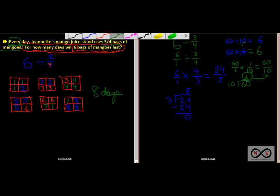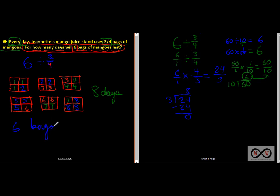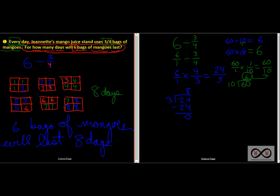Looking at what we've done today: we used our visual fraction model — pictures to represent the operation — and we handled it mathematically as well. Now let's put the answer in words. For how many days will six bags of mangoes last? Six bags of mangoes will last eight days. We used numbers in our mathematical model, pictures in our area model, and words in our complete answer — giving us a well-rounded answer.